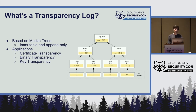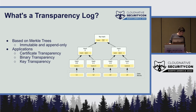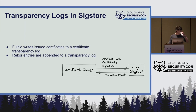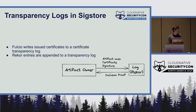There are many applications of transparency logs. Certificate transparency is one example. Binary transparency — things like Recore — is another. And key transparency is another, useful within the end-to-end encrypted messaging space, providing a publicly auditable mapping between keys and identities. Within SigStore, we have two primary uses: Fulcio writes its issued certificates to a certificate transparency log, and Recore entries are appended to a transparency log — though there may be use cases where you only want Fulcio or only want Recore.